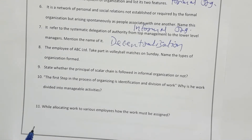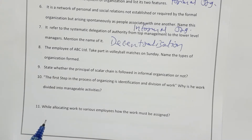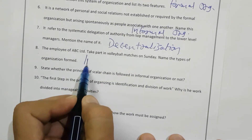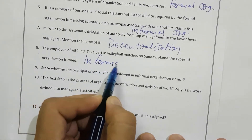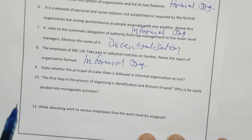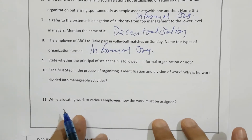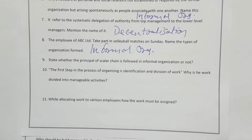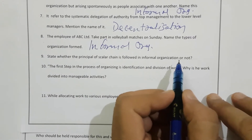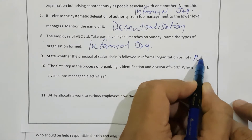The employees of ABC Limited take part in volleyball matches on Sunday. Name the type of organization formed. Obviously it is unofficial, non-official, so it is informal organization. Next, state whether the principle of scalar chain is followed in informal organization or not. Obviously in informal organization they are not following any chain of communication, so it is not followed.